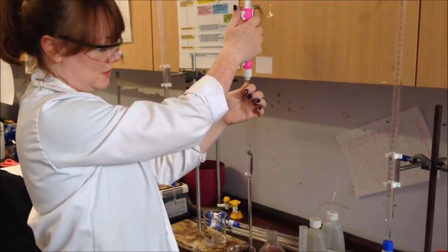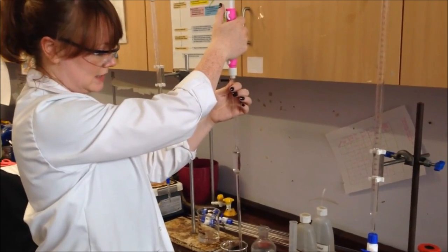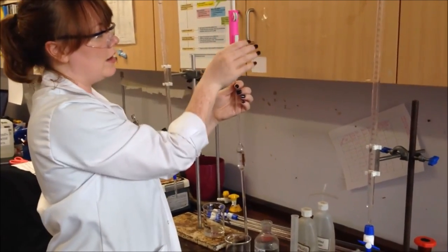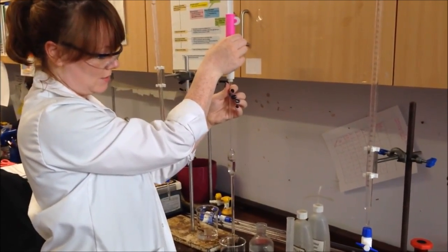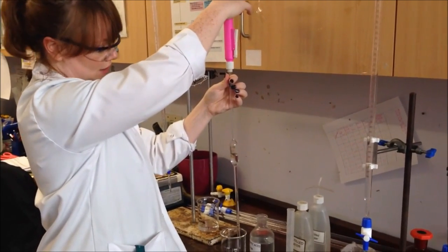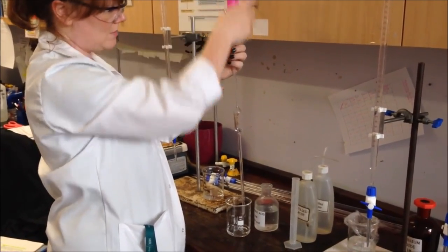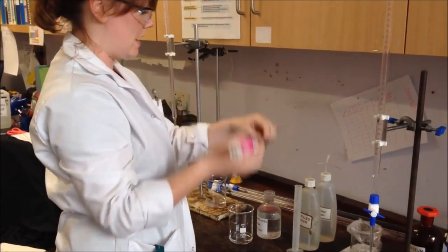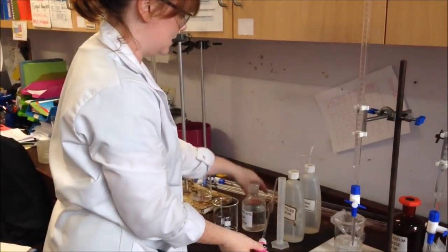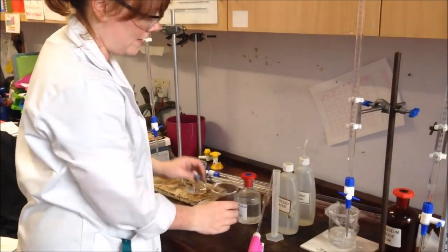Now I have my 25cm³ of sulfuric acid in my measuring cylinder, I can just press the release on the pipette filler here, or just push here to make the sulfuric acid come out. Now I'm going to need to use this same pipette again, so I'm just going to lay that to the side.